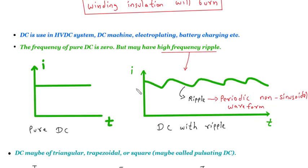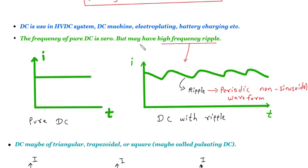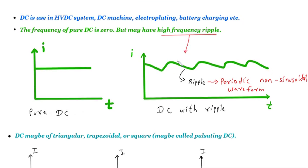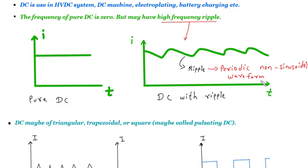DC is used in HVDC system, DC machine, electroplating, battery charging, etc. The frequency of pure DC is zero, but may have high frequency ripple. Ripple is a periodic non-sinusoidal waveform.